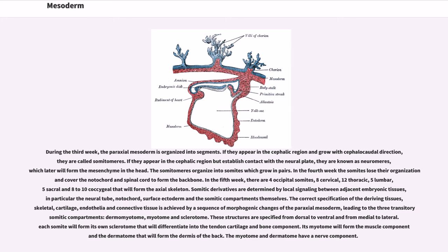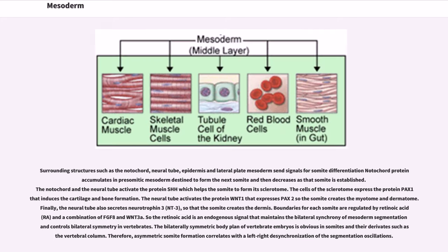Surrounding structures such as the notochord, neural tube, epidermis and lateral plate mesoderm send signals for somite differentiation. Notochord protein accumulates in presomitic mesoderm destined to form the next somite and then decreases as that somite is established. The notochord and the neural tube activate the protein SHH which helps the somite to form its sclerotome. The cells of the sclerotome express the protein PAX1 that induces the cartilage and bone formation. The neural tube activates the protein WNT1 that expresses PAX2 so the somite creates the myotome and dermatome.